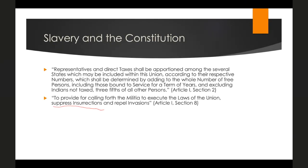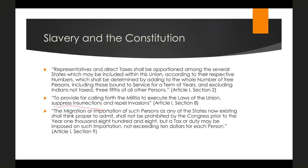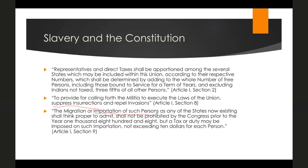Article I, Section 9 states that the migration or importation of such persons as any of the states shall think proper to admit shall not be prohibited by Congress prior to 1808, with a tax or duty allowed on such importation — legally protecting the slave trade until 1808. The practices of American slavery were not in contrast with the Constitution; the Constitution both recognized and legitimated these practices.